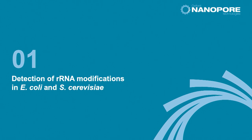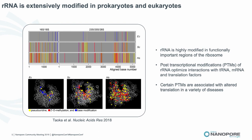First I want to talk about our efforts looking at ribosomal RNA modifications in E. coli and yeast. Ribosomal RNA is highly modified in functionally important regions of the ribosome. I'm showing the small subunit on the left and the large subunit on the right for E. coli, yeast, and human. These vertical colored lines are essentially the positions and type of modifications within these subunits, and you can see they progressively increase in number as you go to more complex organisms. The colors indicate whether the modification is a pseudouridine, a 2-O methylation, or a base modification.